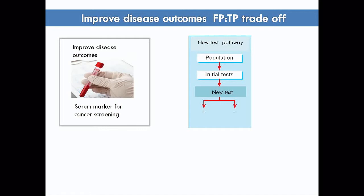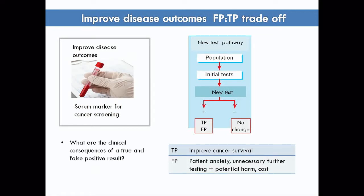The situation is often that you're introducing a new test as an add-on. Using the example of the serum marker for screening — sometimes there might not be an existing test, so you've actually got a new test pathway; the existing test is no test. The consequences for patients are no change if the result is negative — they don't get further management — but the major action is happening when they test positive, and the consequences depend on whether it's a true positive or a false positive. The question is: what are the clinical consequences of those two results? Improved cancer survival versus patient anxiety, unnecessary further testing, potential harm and cost of false positives. What's the maximum false positives you'd tolerate for one additional true positive?